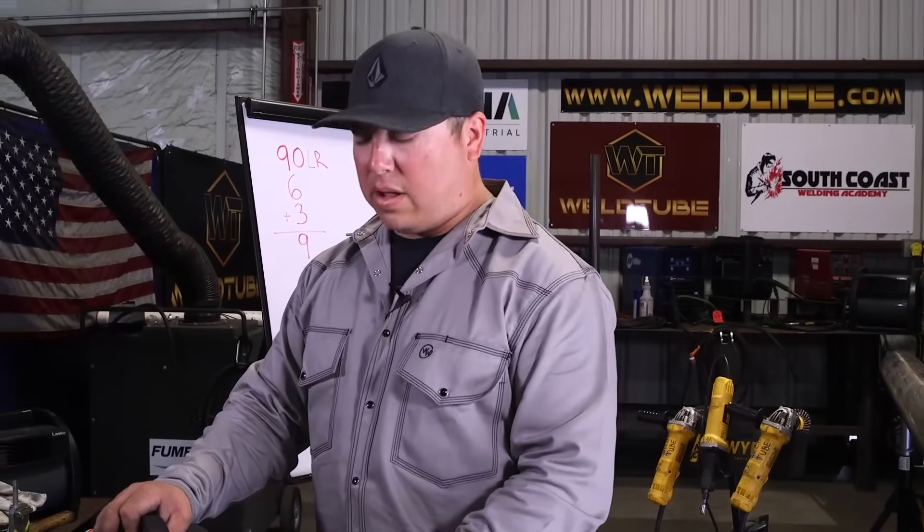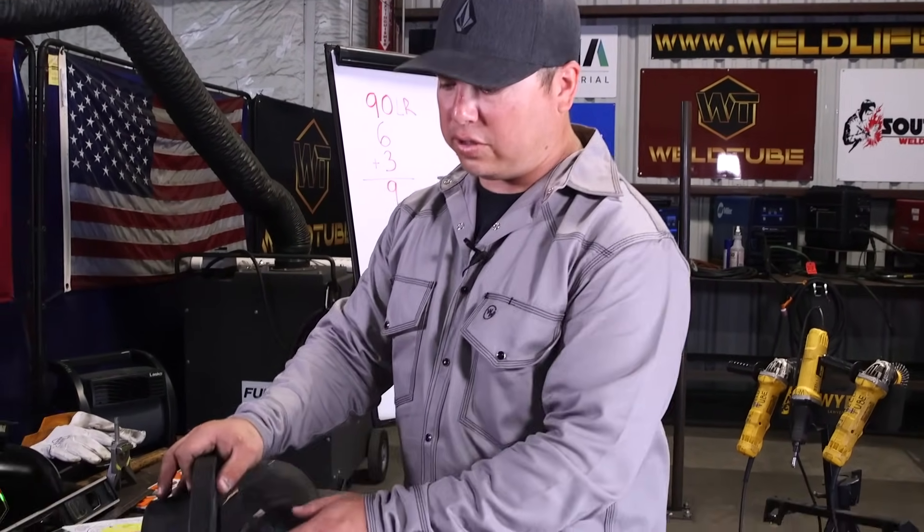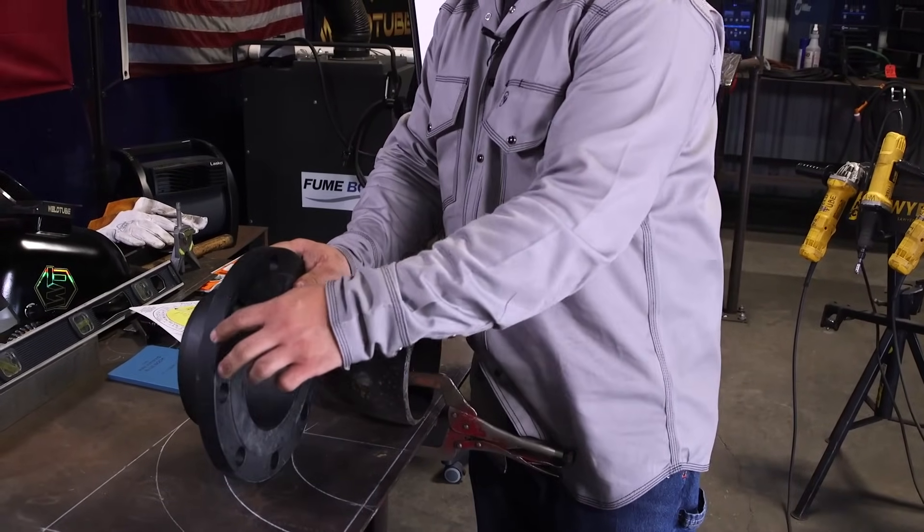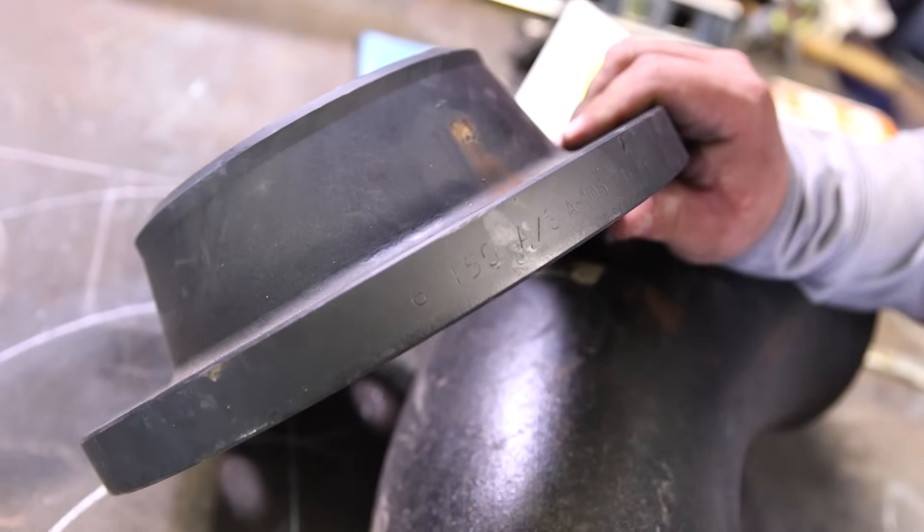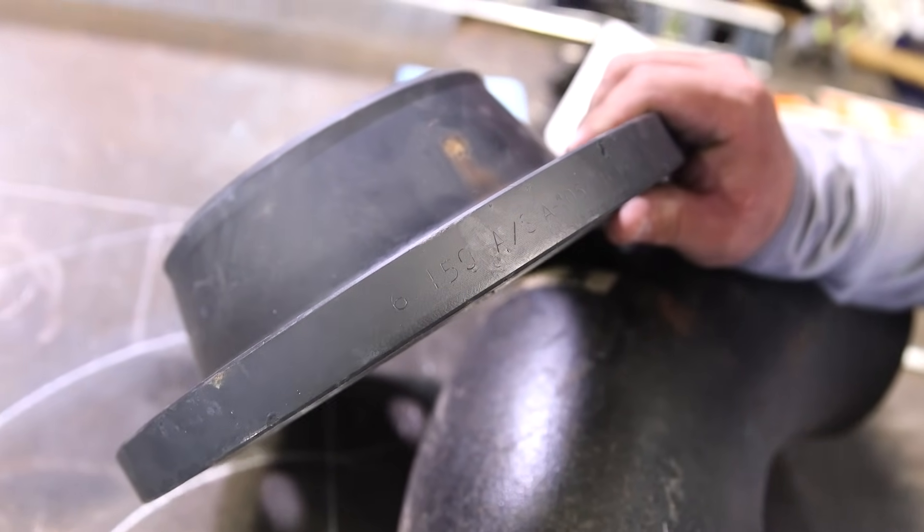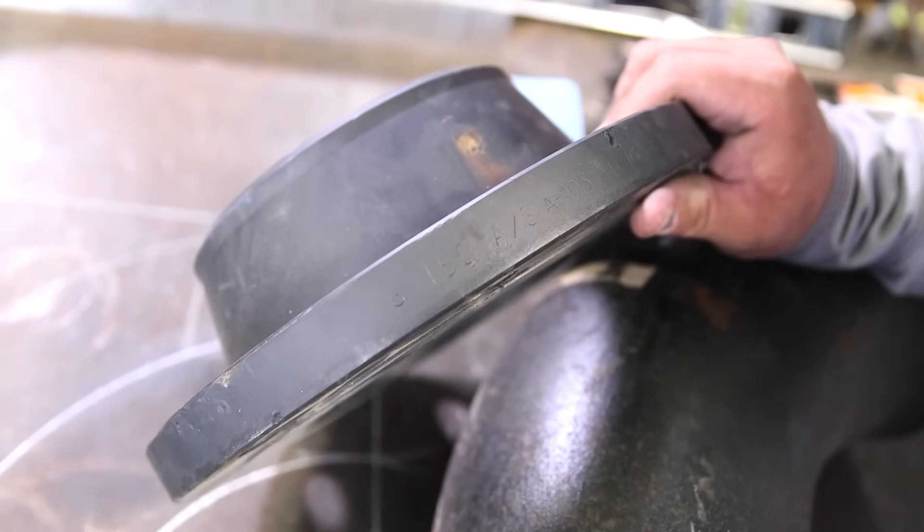Alright guys, so in order to know what kind of flange or what class of flange you have, there's actually stamping usually on this outer edge of this flange. And you can see here, this one says 6 inch, 150 on it. So we know we have a class 150 flange.